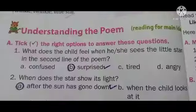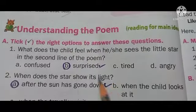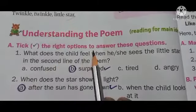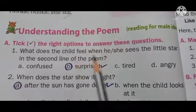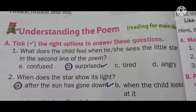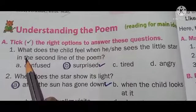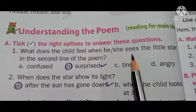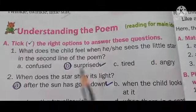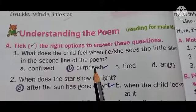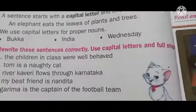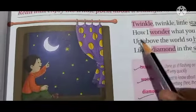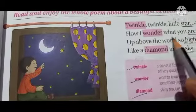Now, textbook exercises. Understanding the poem — tick the right options to answer these questions. First question: what does the child feel when he or she sees the little star in the second line of the poem? The second line of the poem is: 'How I wonder what you are.'